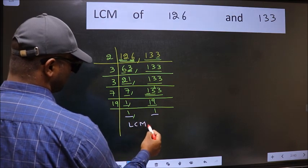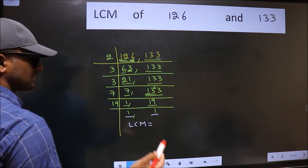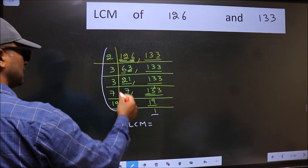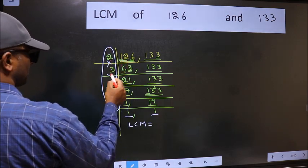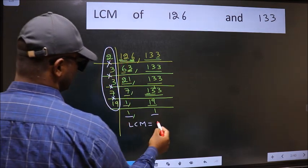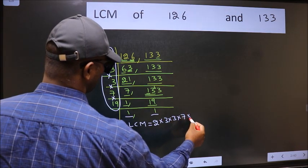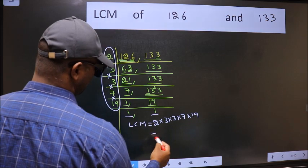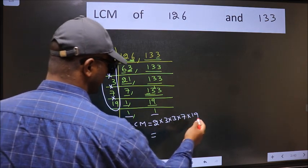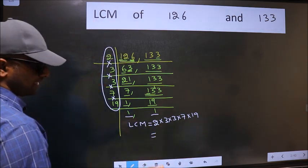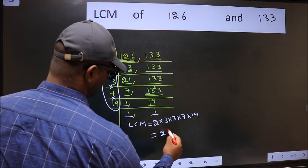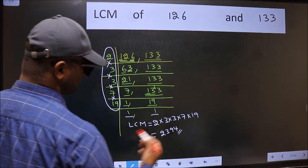So our LCM is the product of these numbers: 2 into 3 into 3 into 7 into 19. When we multiply these numbers, we get 2394 as our LCM.